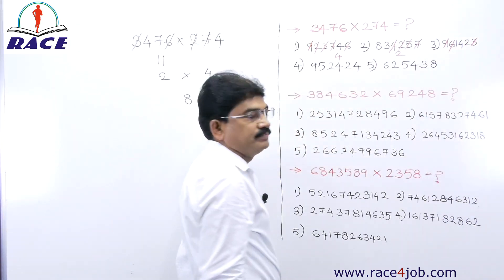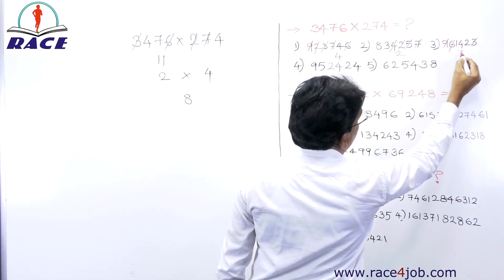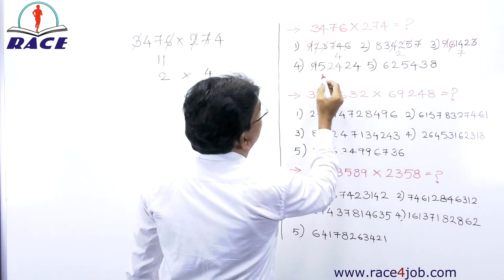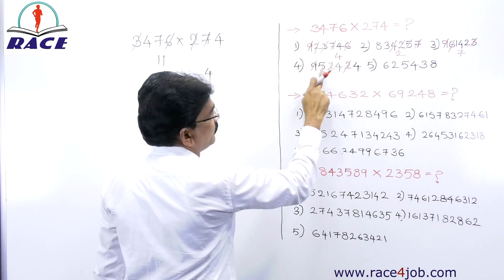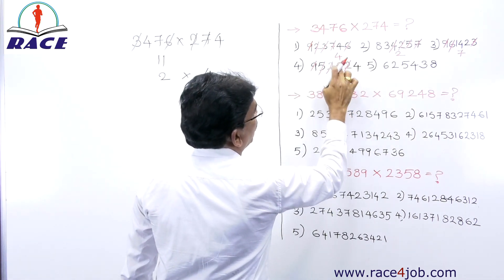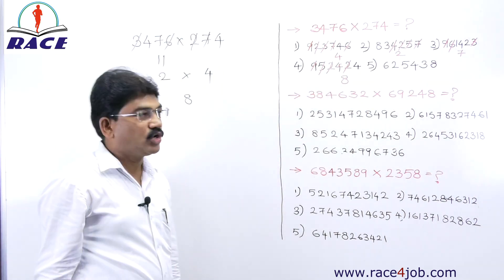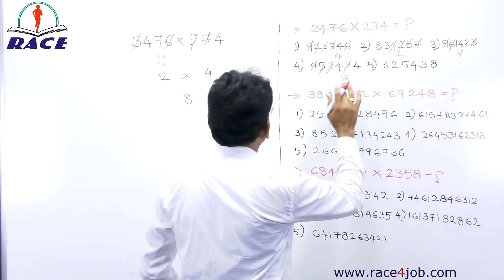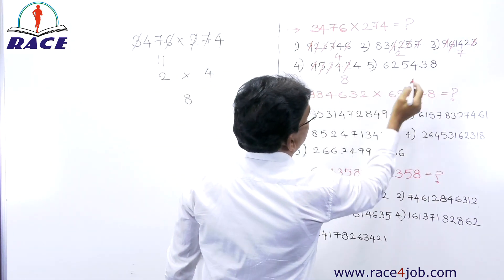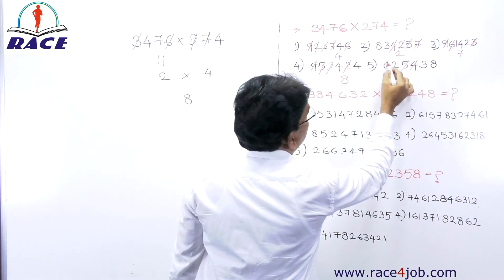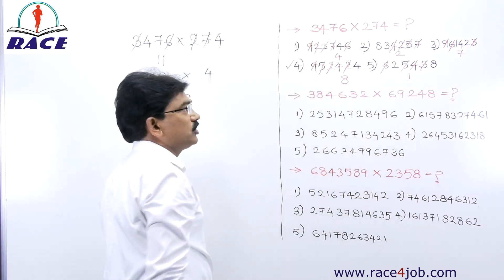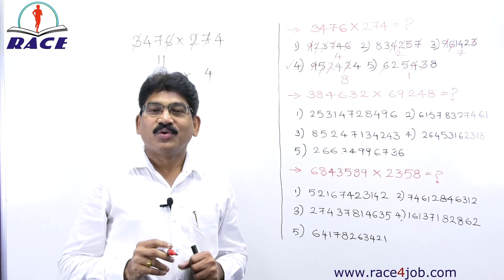For option 3: strike off 9, then 6 and 3 give 9, what is left is 1; 5+2=7. Third option digit sum is 7. For option 4: strike off 9, then 5+2=7, 7+2=9 — strike off; 4 and 4 remain, 4+4=8. Fourth option digit sum is 8. That matches our question digit sum of 8, so this may be our answer. For option 5: 5 and 4 give 9, 6 and 3 give 9, 2+8=10, 1+0=1. Fifth option digit sum is 1. So the right answer is option 4.